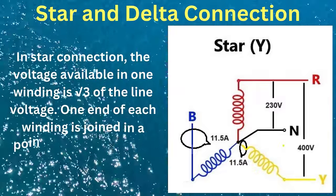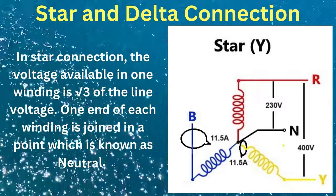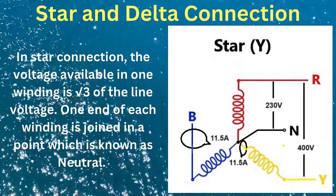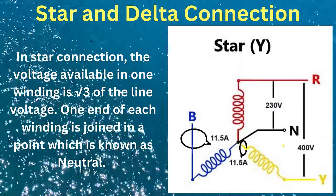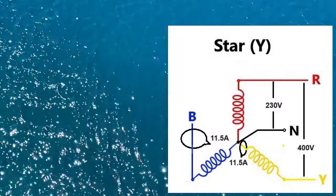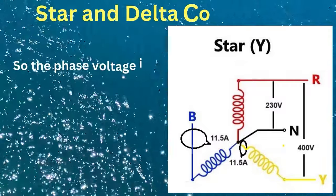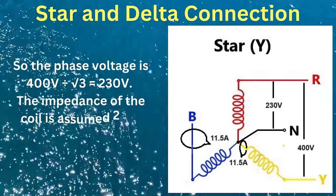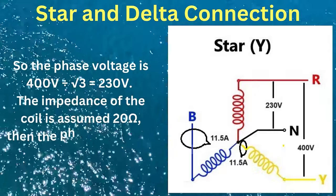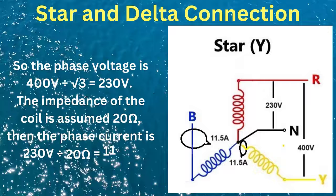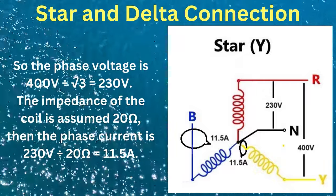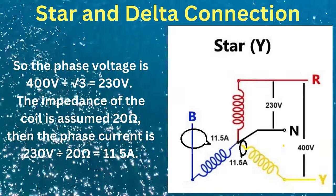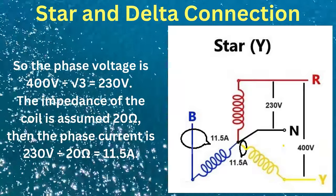One end of each winding is joined at a point known as the neutral. So the phase voltage is 400 volts divided by root three, which equals 230 volts. Assuming the impedance of the coil is 20 ohms, the phase current is 230 volts divided by 20 ohms, which equals 11.5 amps.